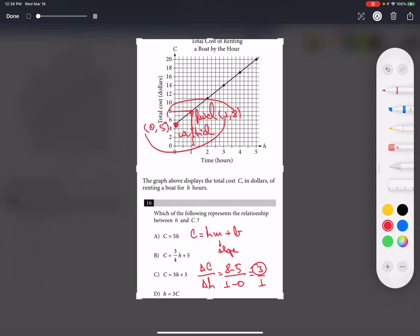Now let me write: C equals M times H, and M is three, so it's three H plus B. B is my Y-intercept, where the line crosses the Y-axis. Here it crosses at five, so B is five. Therefore, C equals three H plus five.